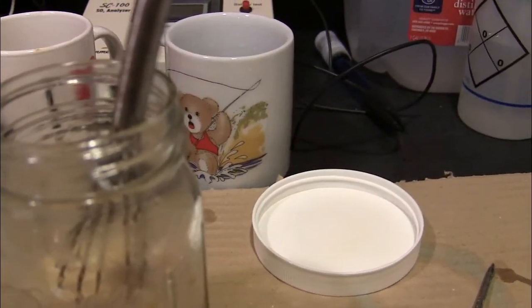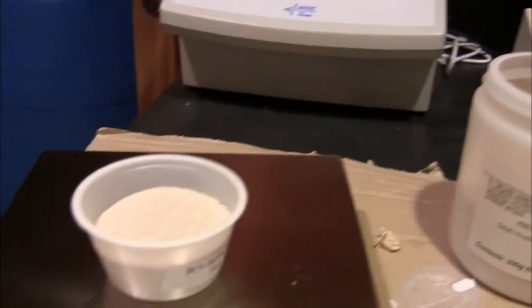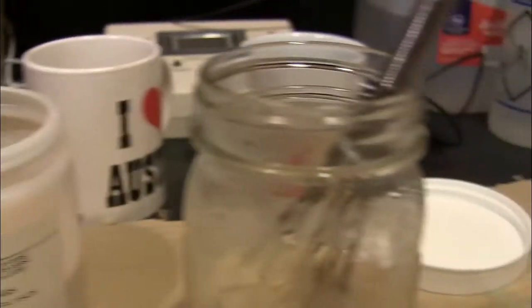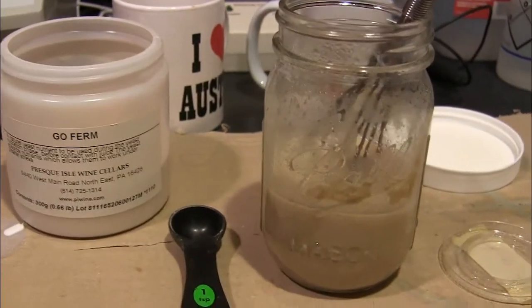I'll just make sure that's good and blended. Basically, the amount of GoFirm that we use, we respect the ratio of one part yeast and 1.25 parts of GoFirm. So I did the math for 26 grams, but I've already added it into the water and whisked it around.